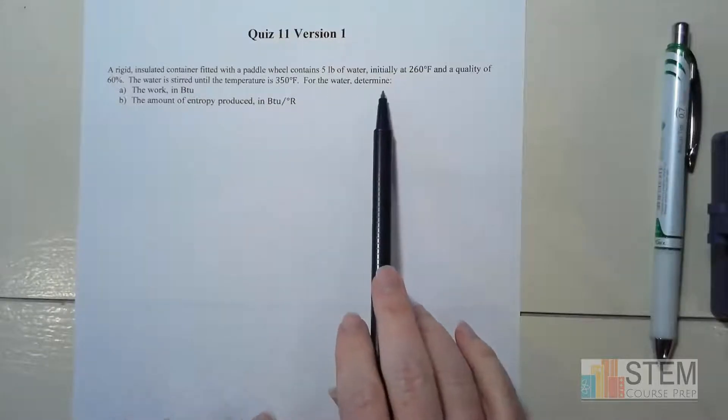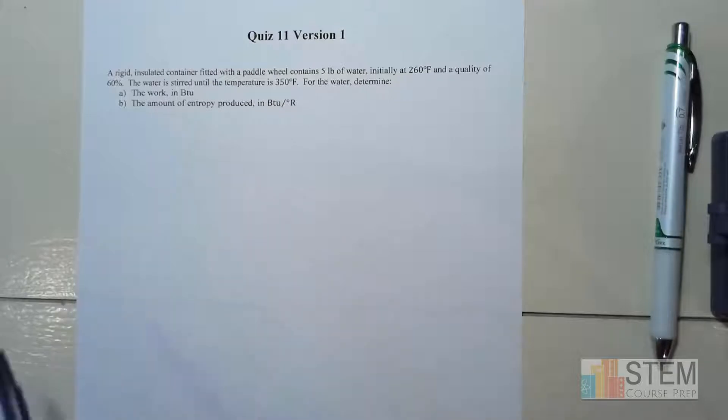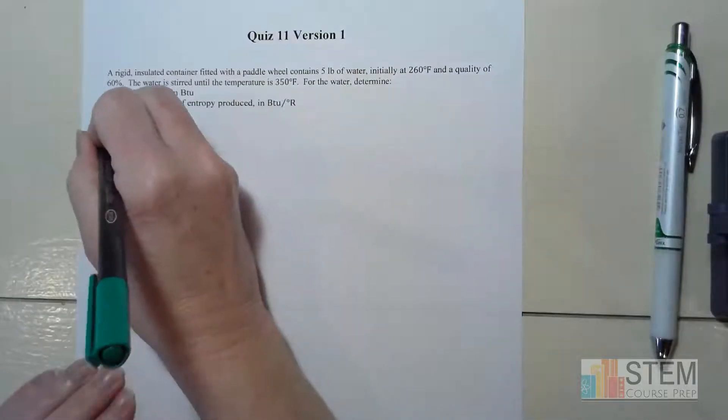For this water, we want to determine the work in BTU and also find the amount of entropy produced in units of BTU per degree Rankine. So let's start with part A.